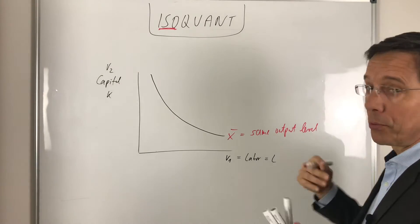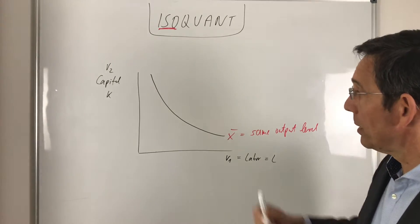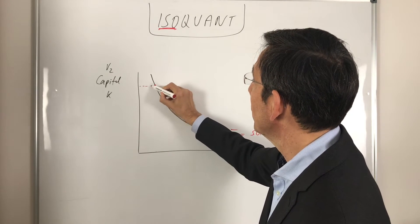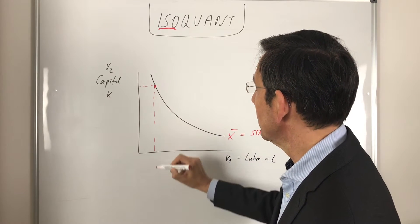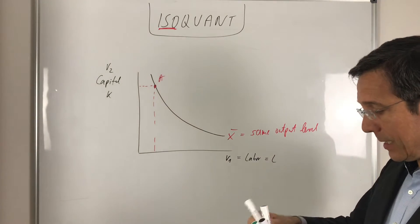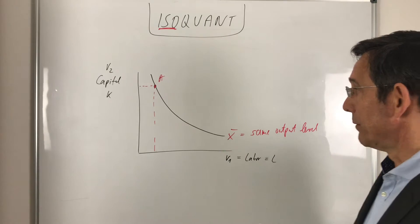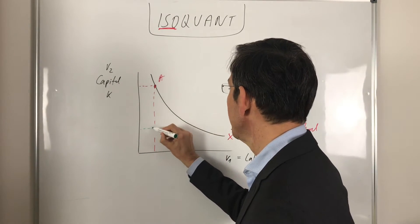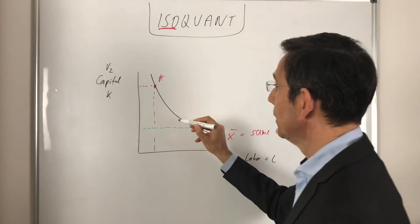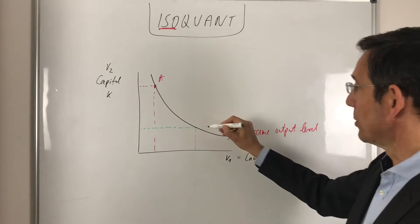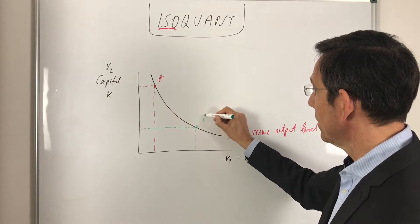So we are in production theory and we say, well, a combination of a lot of capital and a little bit of labor, let's say that's point A, is associated with the same output level as a combination of a little bit of capital and a lot of labor. Let's say that's point B.